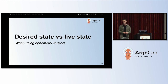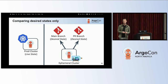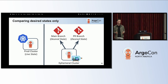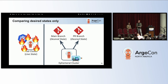Now let's talk about desired state and live state in the context of using ephemeral Kubernetes clusters. Here we're only looking at desired state because we only have access to desired state. We don't know about the live state, so we don't have issues related to out-of-sync applications. Another small benefit is that even if your main production cluster has connectivity issues or resource starvation, this still works because we have no dependencies to the live cluster.